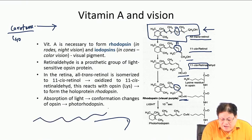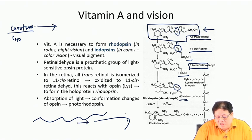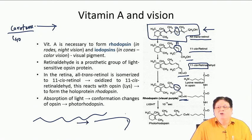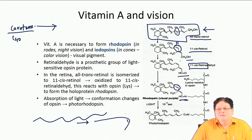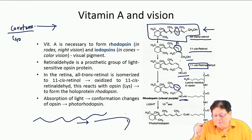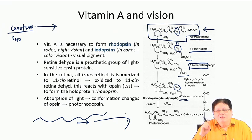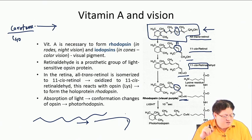There is a change in the overall geometry of the molecule that creates an optical signal, which is then processed in the brain, and that is how we see what is in front of us.